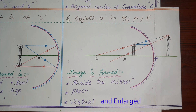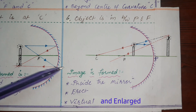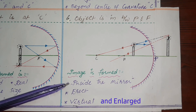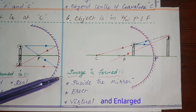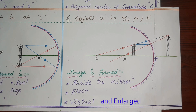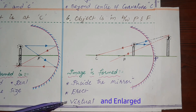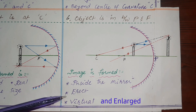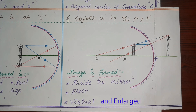The characteristics of the image when the object is between the pole and focal point: the image is formed inside the mirror. Images formed inside the mirror are always virtual, virtual images are always erect, and the image is enlarged.